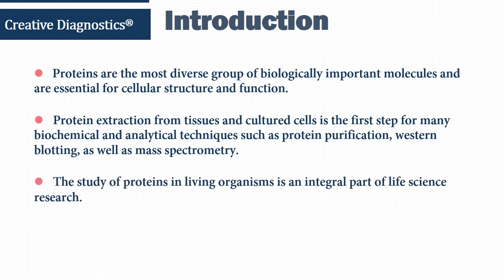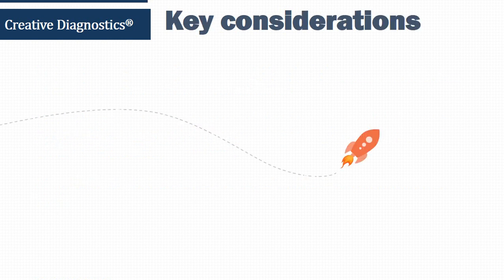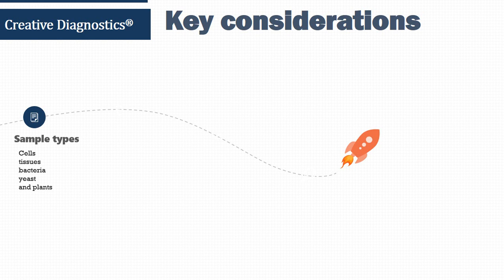The study of proteins in living organisms is an integral part of life science research. When you are going to extract protein from cells or tissues, here are some key considerations you should take into account. Protein can be extracted from various sample types including cells, tissues, bacteria, yeast, and plants.